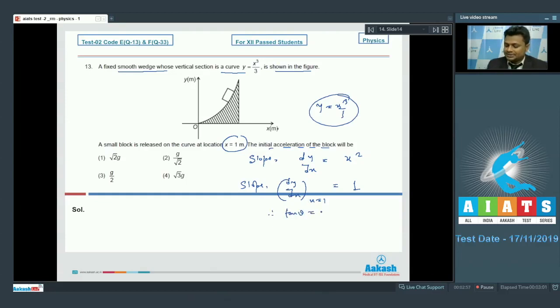Slope is nothing but tan theta. So therefore we can write tan theta is equal to 1, theta is equal to 45 degree. Means at x equal to 1, the angle is 45 degree and situation can be drawn in this manner. This is wedge, at that moment 45 degree, downward acceleration gravity g.